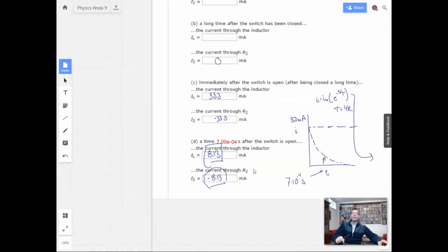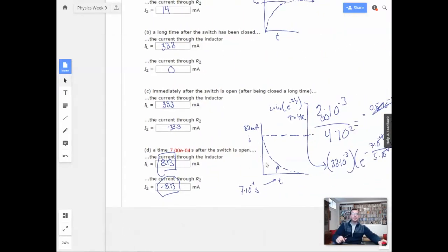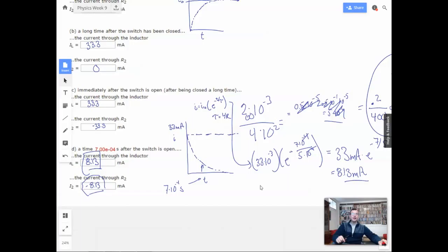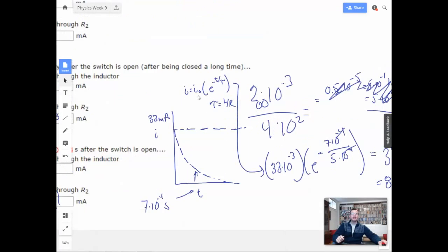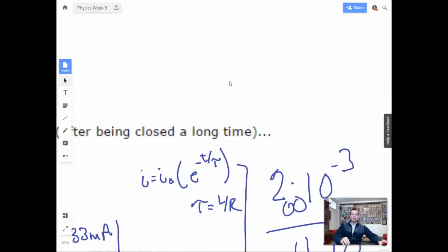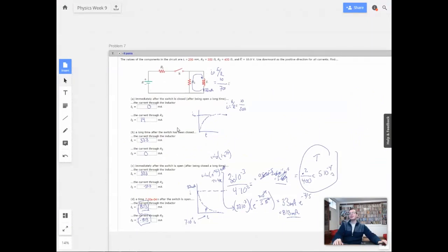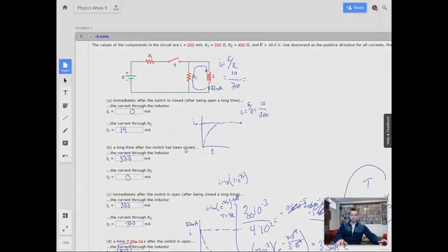So that's all there is for this problem. So tau equals L over R, you have an equation E to the negative T over tau. That's for a decay, as the water wheel is slowing down. Or you have, for a water wheel spinning up, you have E to the negative T over tau, which then it goes to its maximum of I-naught, where this goes to a maximum, or this goes to a final destination of zero. And that's all I got for problem seven. See you, problem eight.